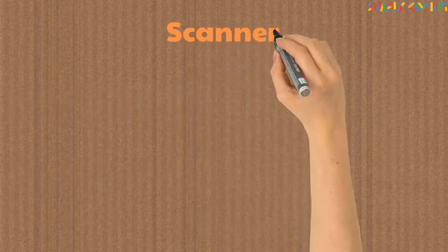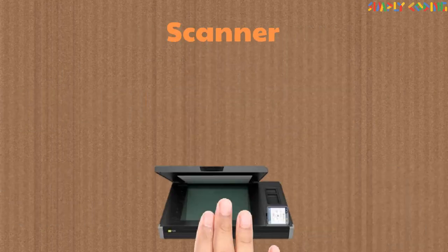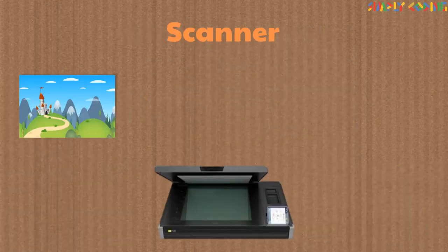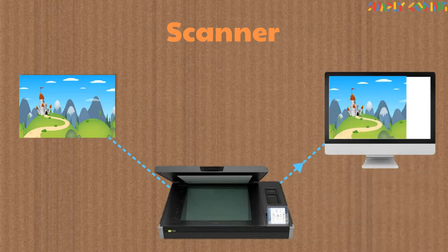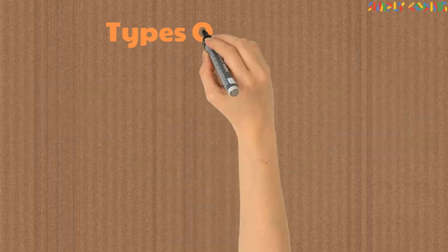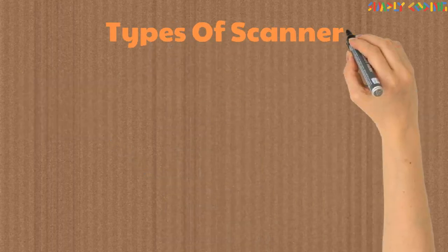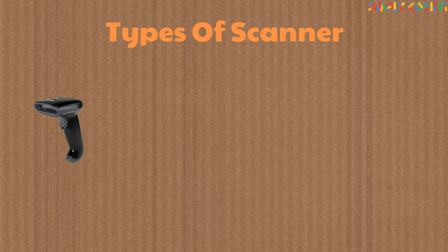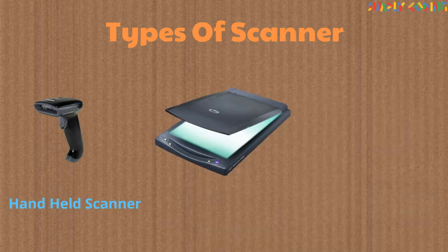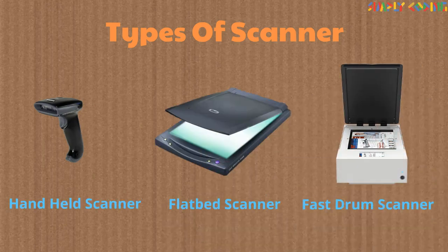A scanner works like a photocopier machine. It converts any text or images on a paper into an electronic form. Scanners come in various sizes, from small handheld scanners to flatbed scanners to fast drum scanners.